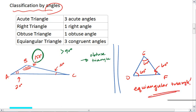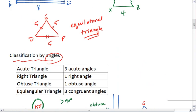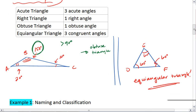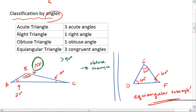And that's the last way to classify triangles based on angles. So we have three possible classifications based on sides, scalene, isosceles, and equilateral. And four possible classifications based on angles, acute, right, obtuse, and equiangular.